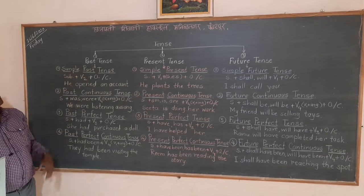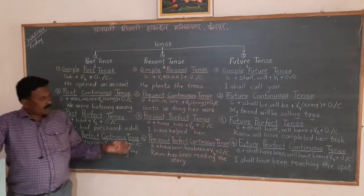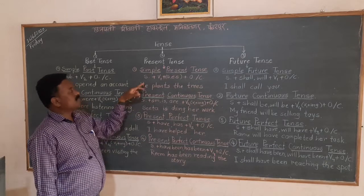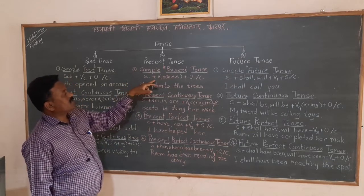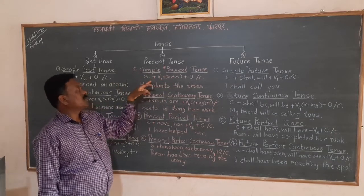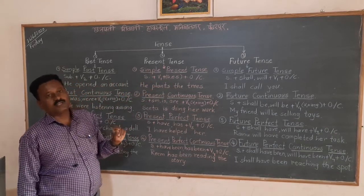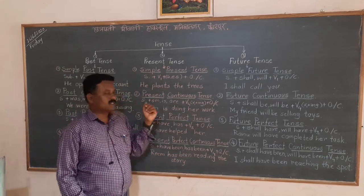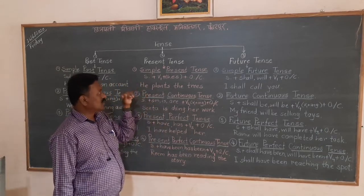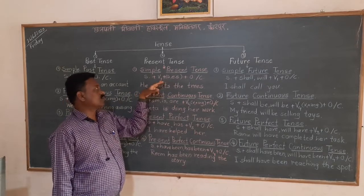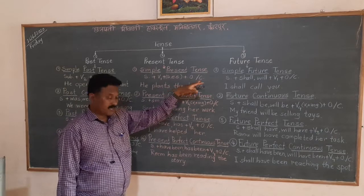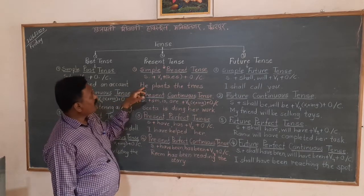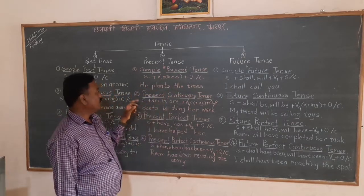Now we turn towards present tenses. In present tense there are also four sub-kinds. Simple present tense: the construction is subject plus V1, plus S or ES suffix when the subject is third person singular — meaning when the subject is he, she, it, or a singular name — we join the suffix S or ES to the main verb, followed by object or complement. Example: 'He plants the trees.'